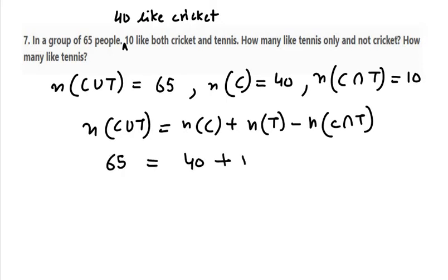So N(C∪T) is 65, N(C) is 40, N(T) is unknown. N(C∩T) is 10. So 65 equals 40 plus N(T) minus 10. Therefore, 40 minus 10 is 30, and 65 take away 30 will be 35.